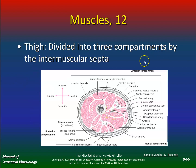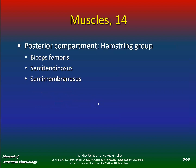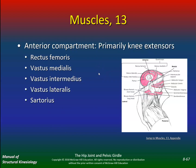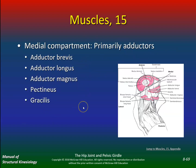The thigh is divided into three compartments by the intermuscular septa. Anterior compartment — primarily knee extensors: rectus femoris, vastus medialis, vastus intermedius, vastus lateralis, and sartorius. Posterior compartment — the hamstring group: biceps femoris, semitendinosus, and semimembranosus. Medial compartment — primary adductors: adductor brevis, adductor longus, adductor magnus, pectineus, and gracilis. When studying for exam 2, put these muscles in categories by function.